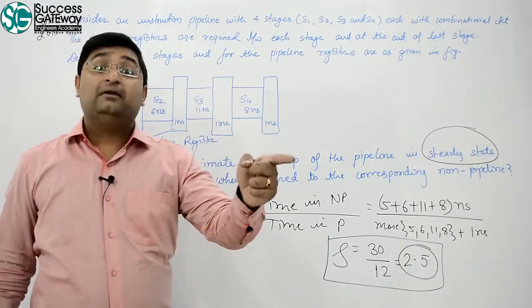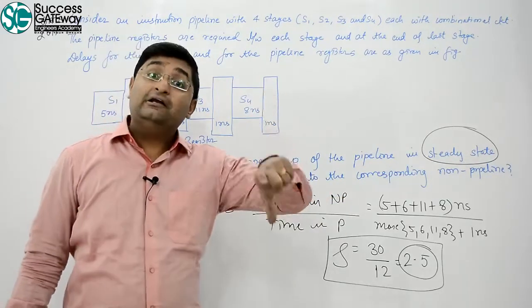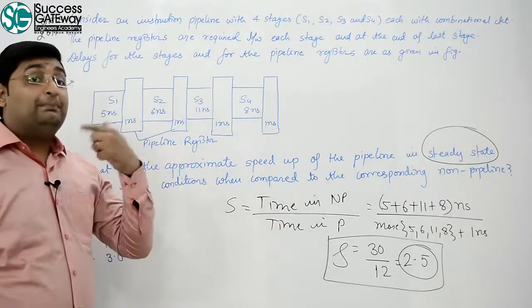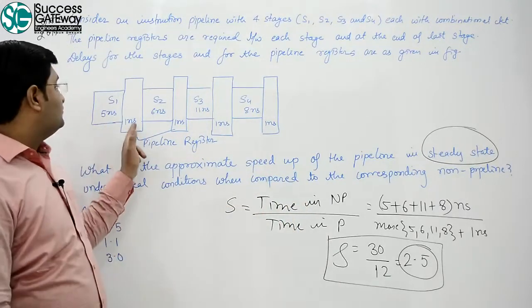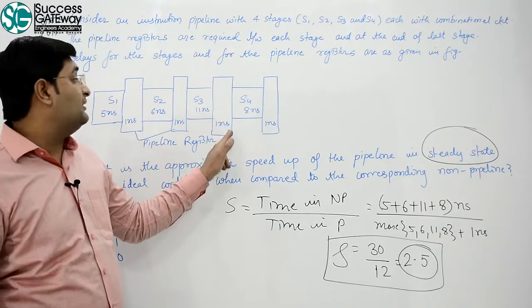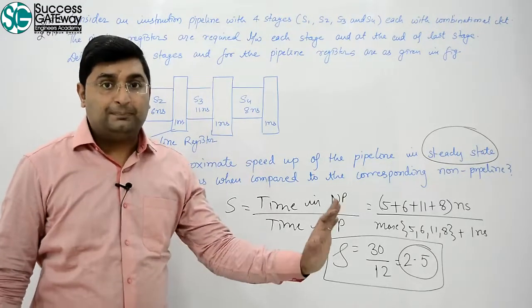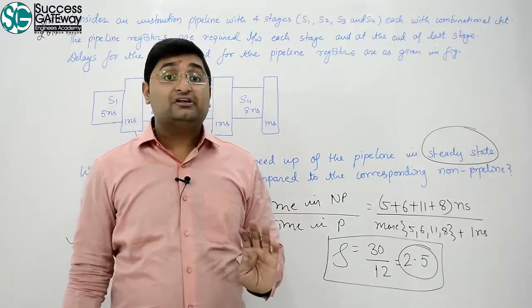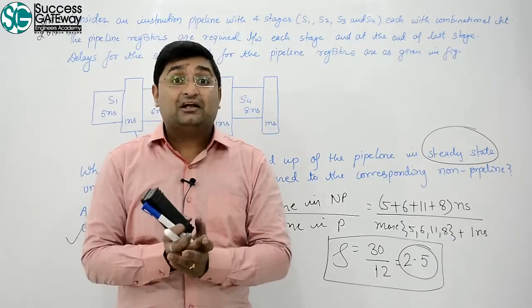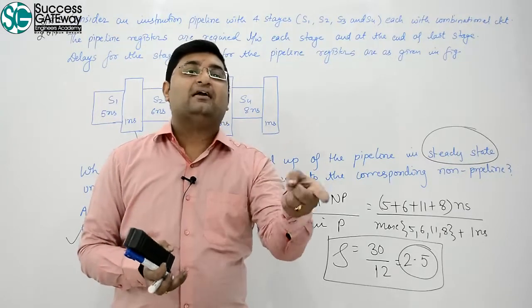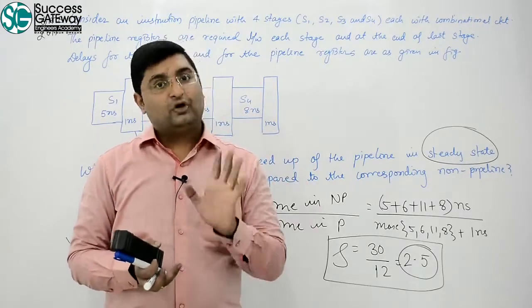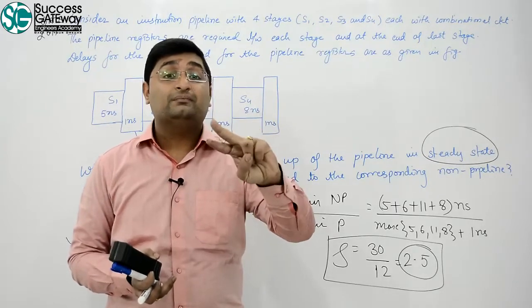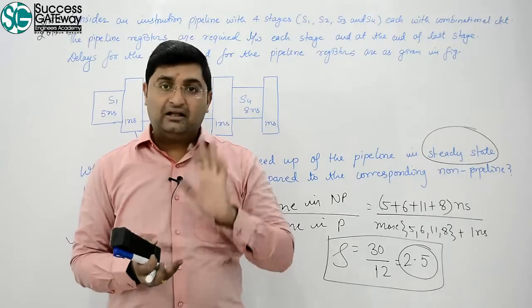But in pipeline, you have to include the registers' delay as well. So in pipeline what is the delay? 5 plus 1 plus 6 plus 1 plus 11 plus 1 plus 8 plus 1. Got the point? Therefore, previous year GATE question, for one instruction, non-pipeline is better than pipeline because of inter-stage register delay, buffer delay.